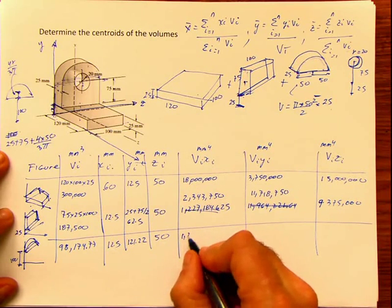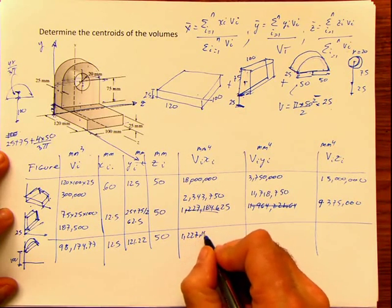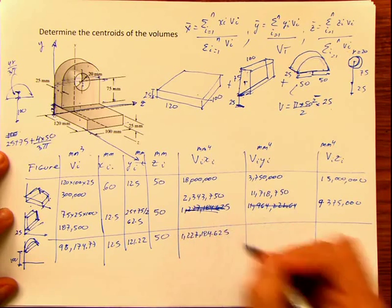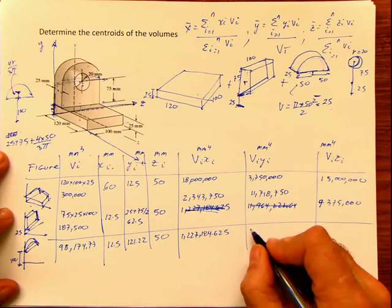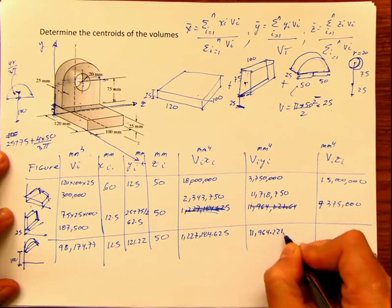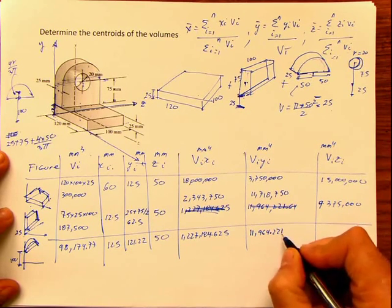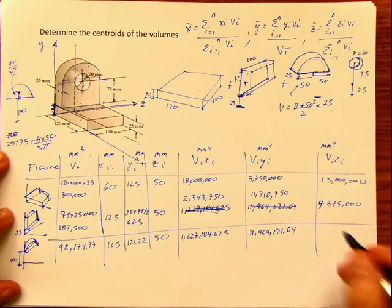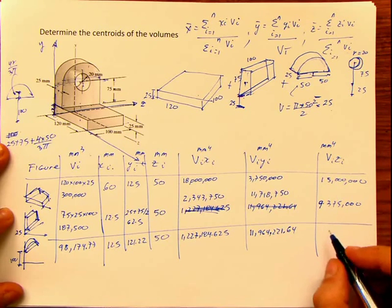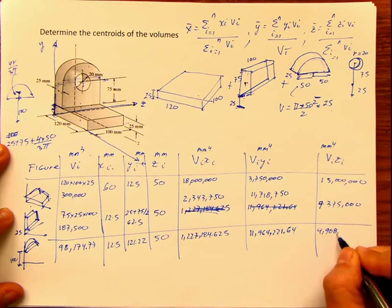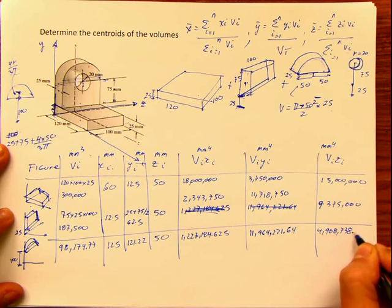The products for Figure 3 are: V·x = 1,227,184.625; V·y = 12,596,422.164; V·z = 4,908,738.5.